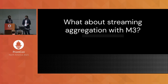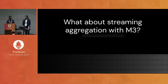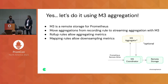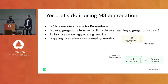But if you wanted to do aggregation outside of your Prometheus instances, use a remote storage solution for larger-scale use cases, and aggregate at almost any level of time series without increasing the load of heavy recording rules — then you can do this using M3 and the M3 coordinator, which allows for streaming aggregation. The aggregation is moved from recording rules to streaming aggregation using what we call roll-up rules.